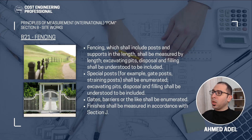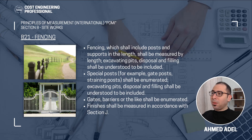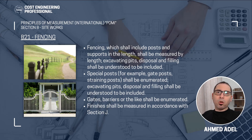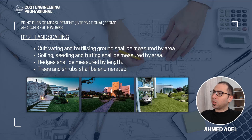Subsection B21 is fencing. Fencing shall include posts and supports in the length and shall be measured by length. Excavating pits, disposal, and filling shall be understood to be included. Any special posts — for example gate posts or restraining posts — shall be enumerated. Gates, barriers, or the like shall also be enumerated. Finishes shall be measured in accordance with Section J, which will be covered in detail in a future video.